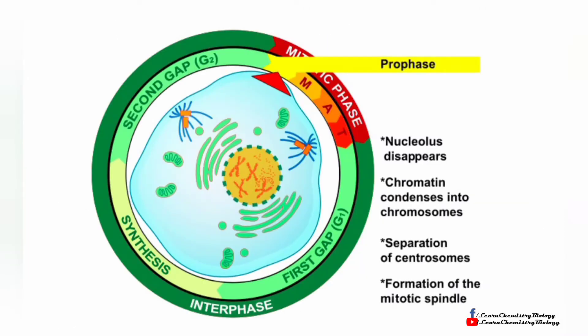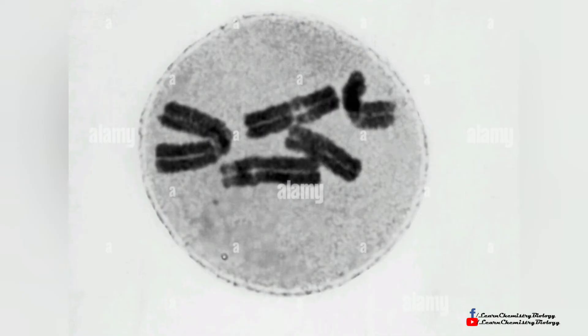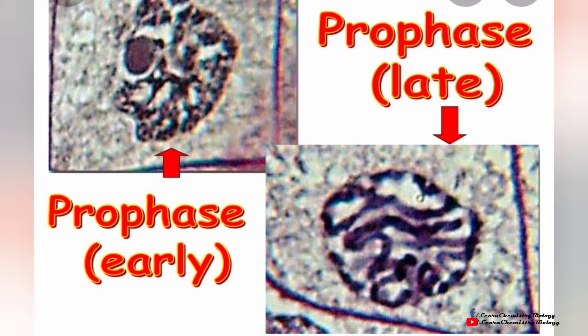Next, we move on to prophase. In prophase, the nucleolus disappears, chromatin condenses into chromosomes, separation of chromosomes takes place, and formation of the mitotic spindle occurs. Here in the microscopic picture of prophase, you can see chromosomes are formed from the chromatin.